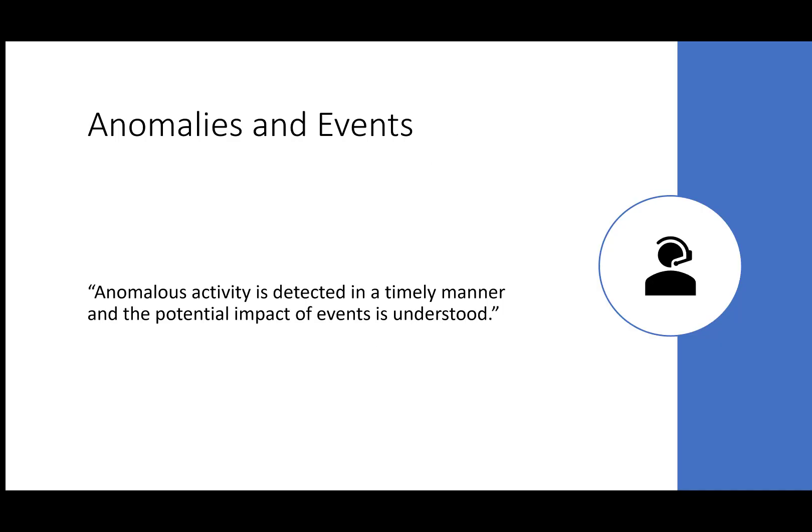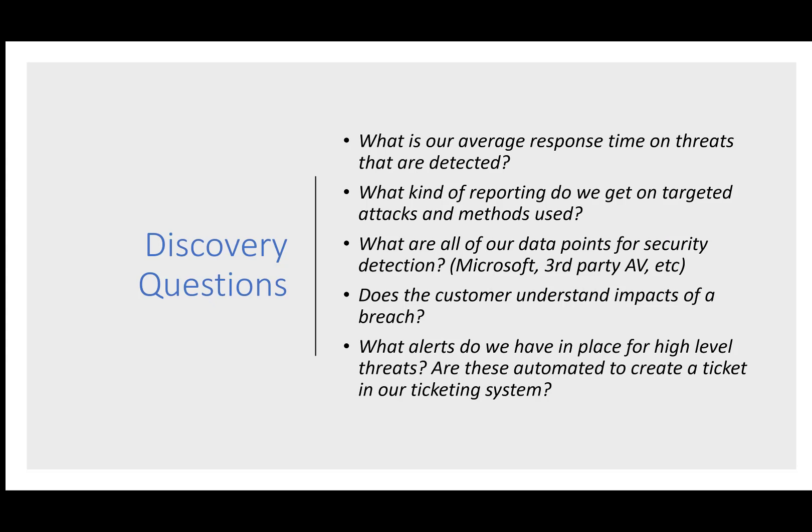When we get into the categories, we have first Anomalies and Events: anomalous activities detected in a timely manner and the potential impact of events is understood. We need to identify what our process looks like, what our reporting looks like for event detection, what our policies are around threats, what the response times are, what kind of reporting we get, can we easily identify where it originated, and what attack method was used.